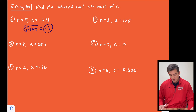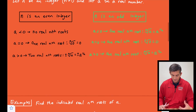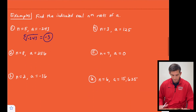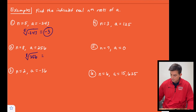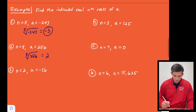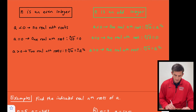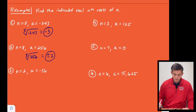Going back to our descriptions: n was five, which is odd, and a was less than zero, so we have one real nth root — negative three. For number two, we're taking the eighth root of 256 and we get two. Since n is even and a is greater than zero, we should have two real nth roots, so the answer is positive and negative two.